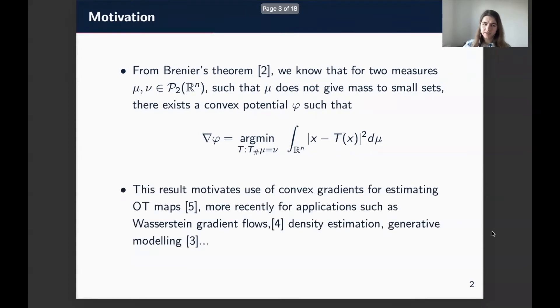And so this result is kind of a cornerstone of the optimal transportation theory, but more recently, it's seen applications in machine learning because this gives us a tractable form of which to model these optimal transport maps. So it's been used for that purpose, as well as for problems such as Wasserstein gradient flows, things like density estimation, and generative modeling.